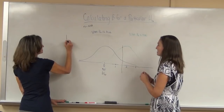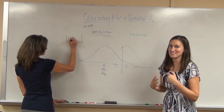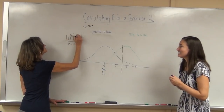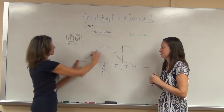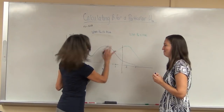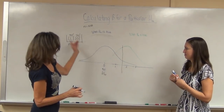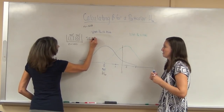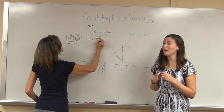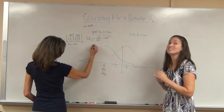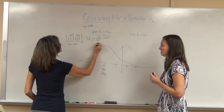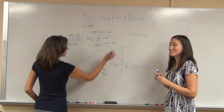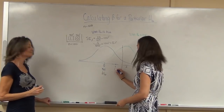We've calculated the standard error when the null is true before. The null is that I'm just guessing — Steve and I don't have ESP — so I have a 50% chance of being right every time. We know it's going to be normally distributed with 100 draws by the central limit theorem. The standard error for the percent when the null is true equals SD of the box divided by the square root of n, times 100%. SD is 0.5 since I have half ones and half zeros. So that's 0.5 divided by the square root of 100, times 100%, which equals 5%.